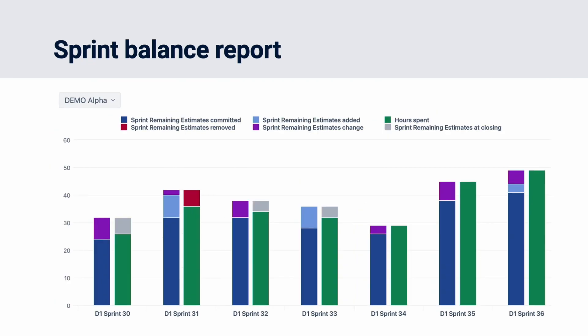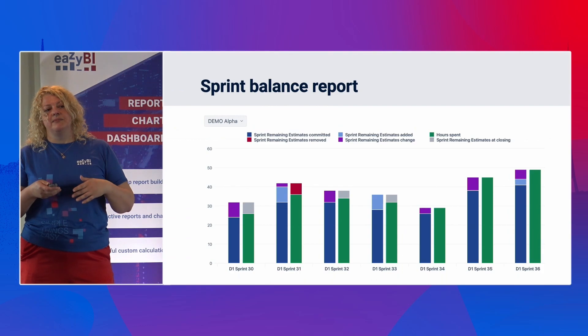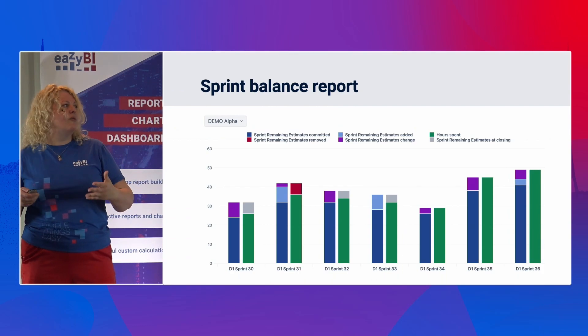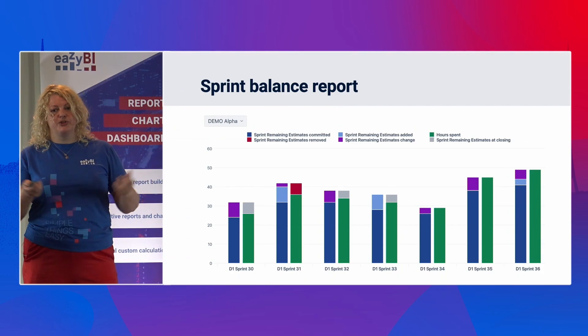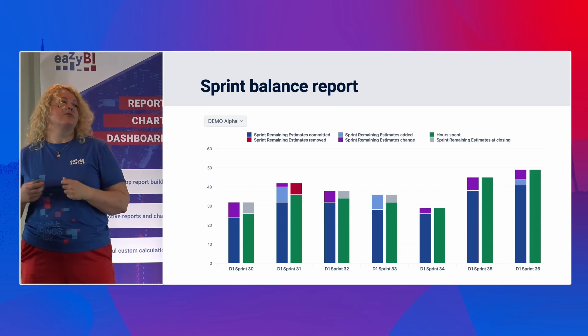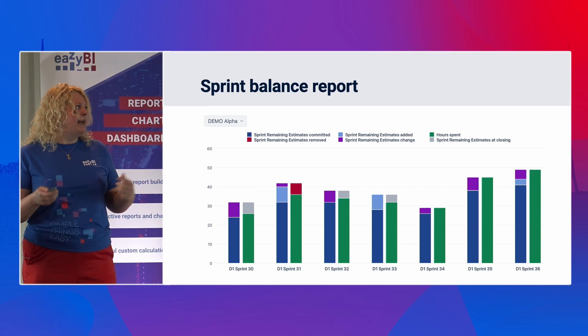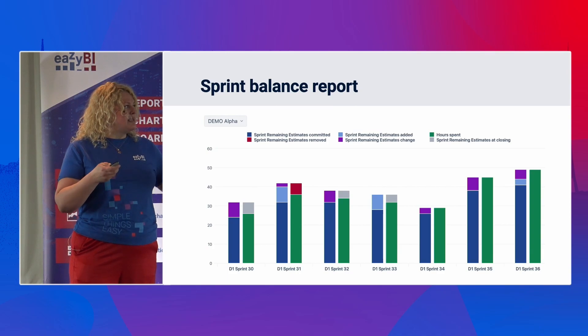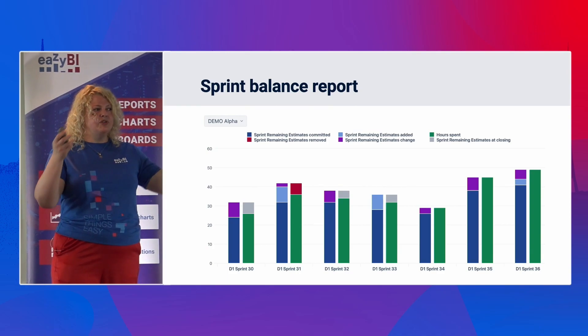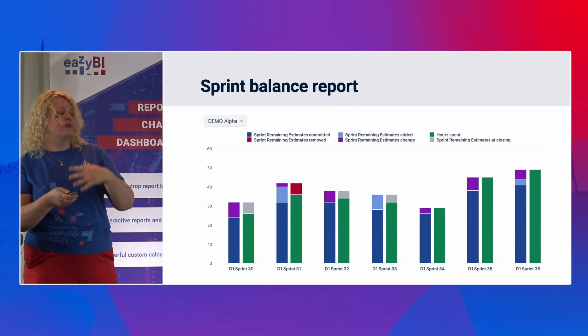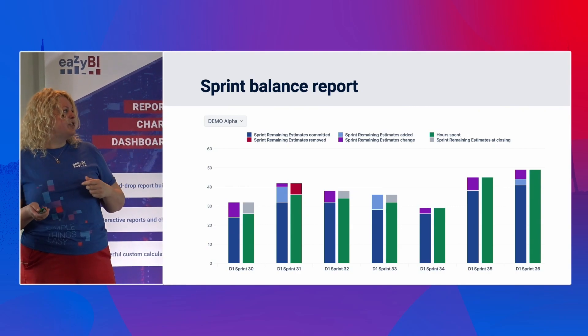We have also created in our demonstration account a balance report of the same type, where we used original estimates together with logged hours to create sprint scope change if you measure sprint scope in time. This is also a way to use Jira standard information together with imported Jira application data.